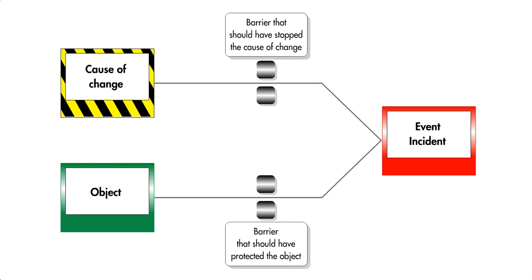The human behaviour model is used to more deeply understand why the barriers failed. A tripod causation path is traced back in time from each failed or missing barrier to its underlying cause.